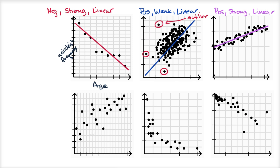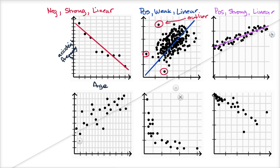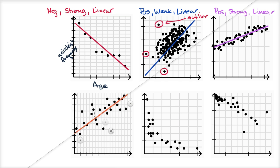Now let's look at this data right over here. I'll get my line tool out again. It looks like I can fit a line, and it looks like it's a positive relationship — the line would be upward sloping. You can use computers and other methods to find a more precise line that minimizes the collective distance to all of the points. But it looks like there is a positive, but I would say weak linear relationship, because you have a lot of points that are far off the line. So I would call this a positive, weak, linear relationship. And there are a lot of outliers here — this one over here is pretty far out.